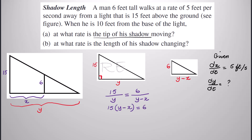Then we can cross multiply: 15 times (y minus x) is equal to 6y. We subtract 6y from both sides to get 9y, and when we add 15x to both sides we get 9y equal to 15x. Dividing both sides by 3 gives us 3y equal to 5x. Now we can isolate y: y is equal to 5/3 x.